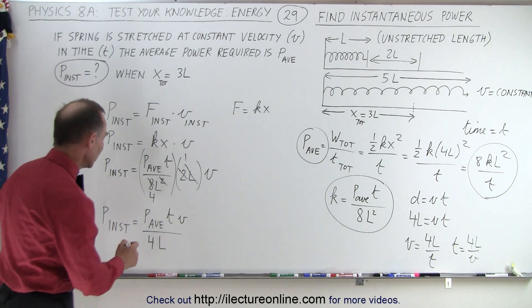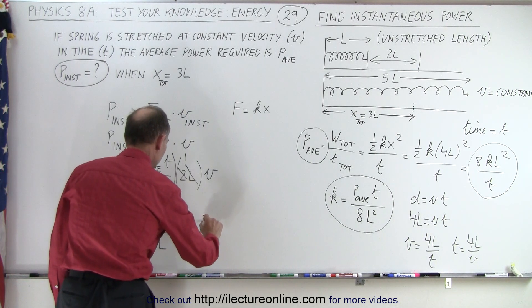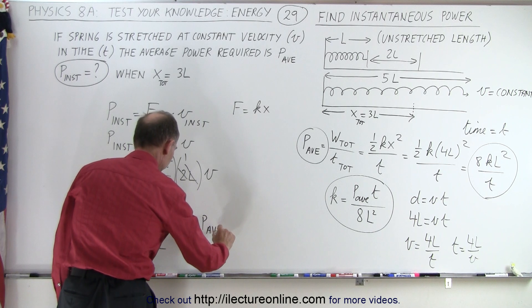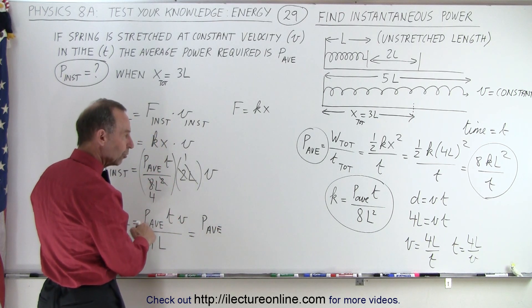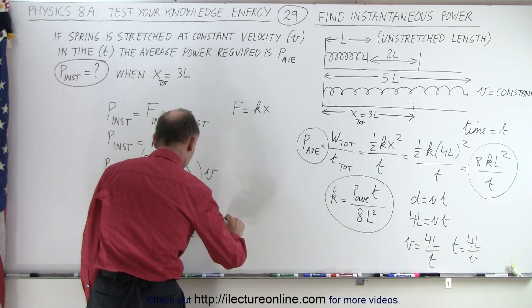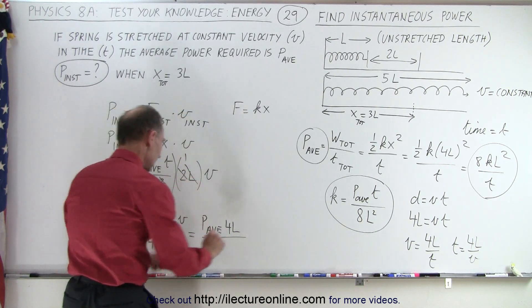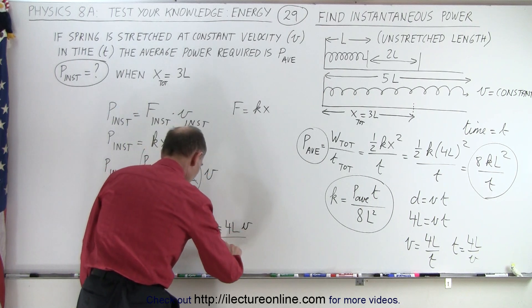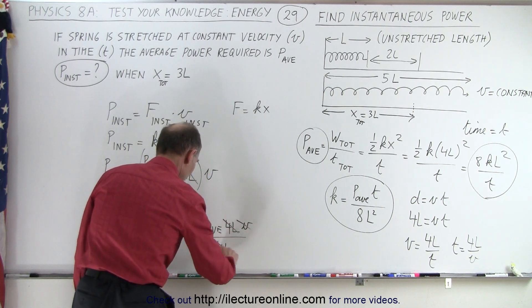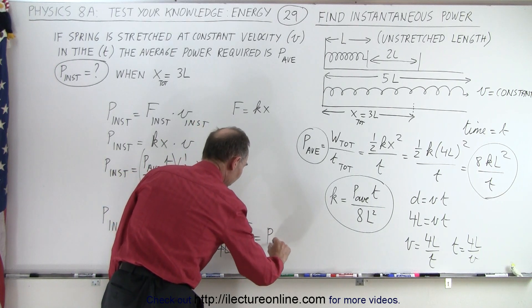But if we want to get rid of the T, then we can see that this is equal to P average. The T is 4L over V, 4L over V, V in the numerator, 4L in the denominator, and notice 4L cancel 4L, V cancel V, and that means this is interesting but important.